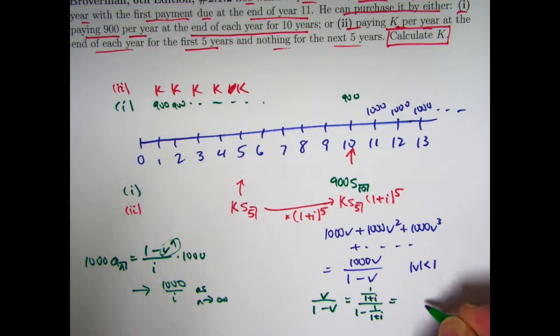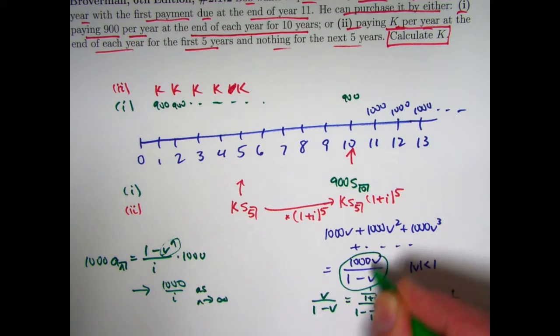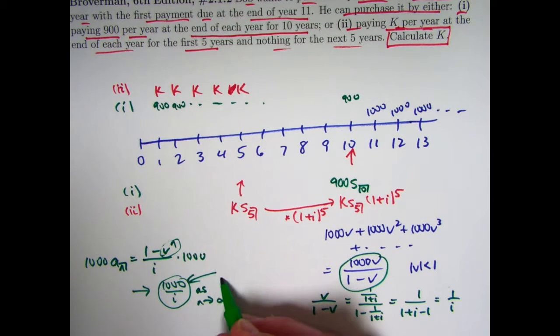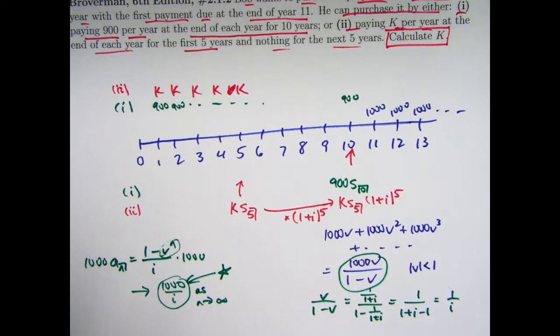And simplify, multiply the top and the bottom by one plus i, you'll get one over one plus i minus one, you will get one over i. So in fact, this quantity and this quantity are the same thing. I think we'll actually use this quantity. That'll be a little easier to use in relating it to the other two things here.